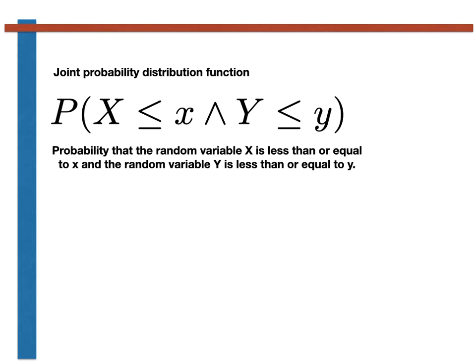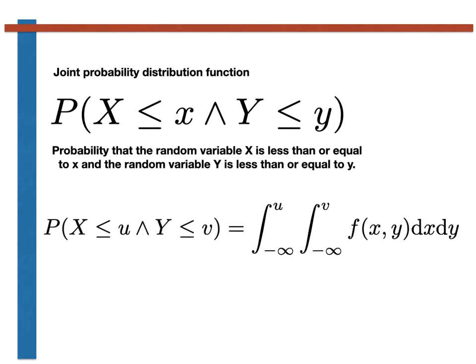By extension, you have also seen that we can recover the cumulative distribution from the probability density by computing an integral. By a similar token, the joint probability density function is defined to be a function from which we can calculate the cumulative probability distribution function by finding the double integral shown here.